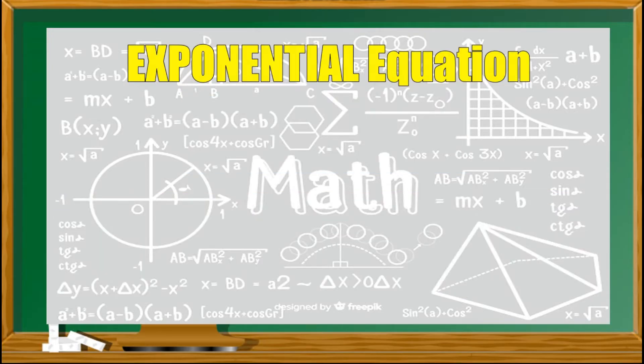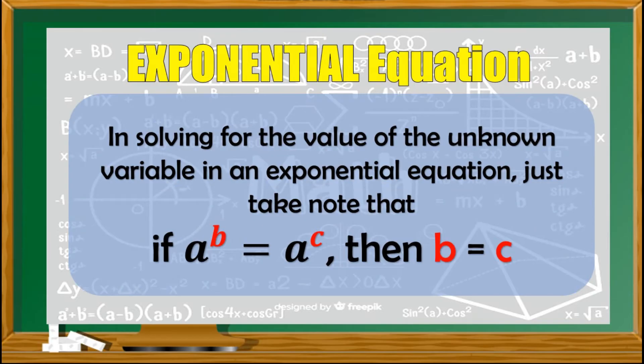So what is the rule in an exponential equation? In solving for the value of the unknown variable, we need to take note that if a raised to b is equal to a raised to c, then b is equal to c. Meaning to say, when the bases are the same, the exponents are equal.